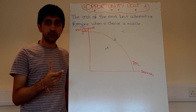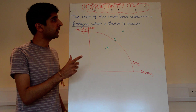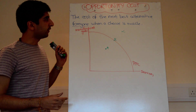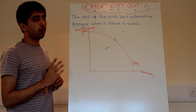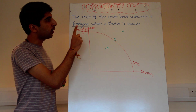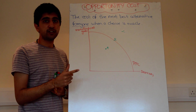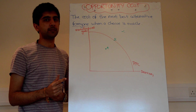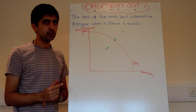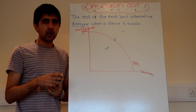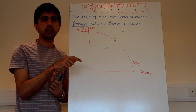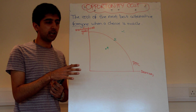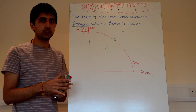Any time we need to make a choice in economics, we must consider the notion of opportunity cost. Opportunity cost is the cost of the next best alternative foregone when a choice is made — what was the next best thing we could have done, the next best thing given up in order to fulfil this choice.